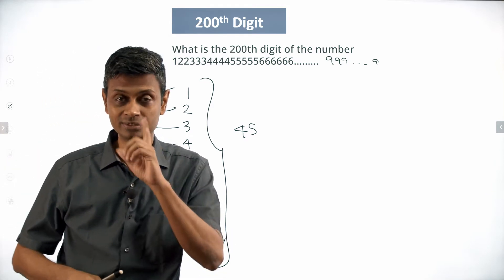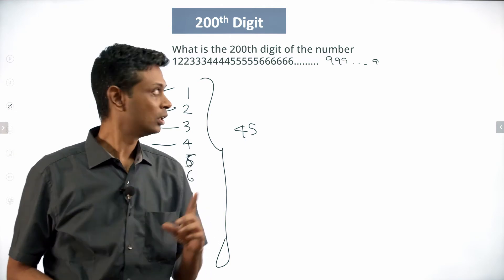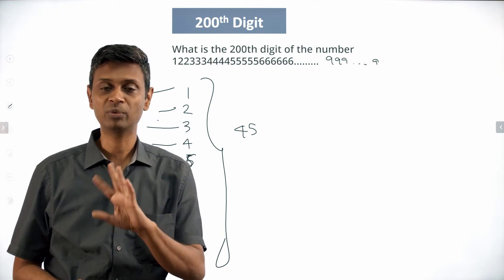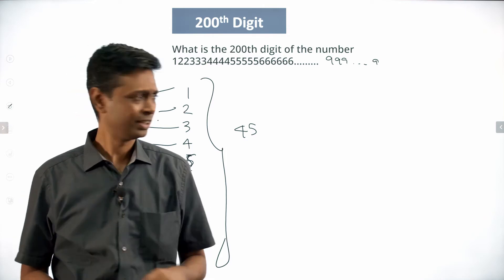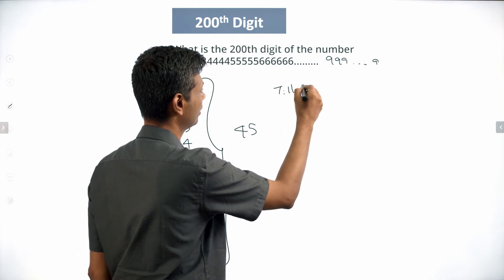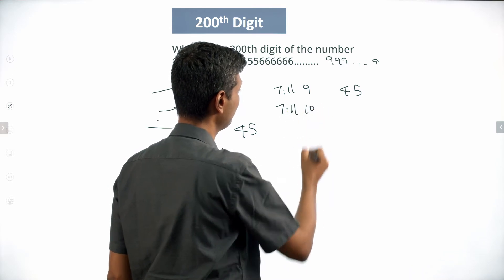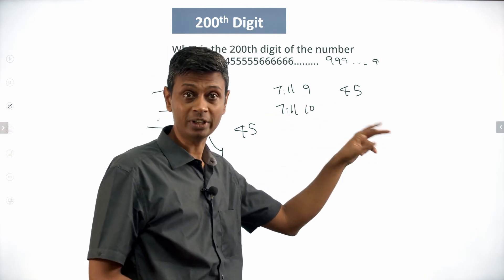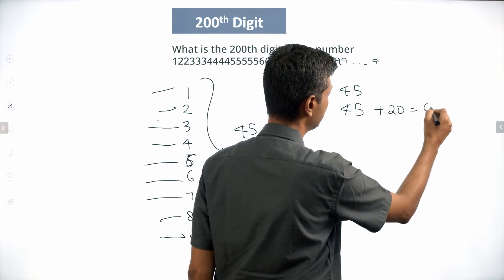When the 46th digit is 1, the 47th digit is 0 — digits 46, 47 are 1, 0. Digits 48, 49 are 1, 0. Digits 50, 51 are 1, 0. 10 will get repeated 10 times, so now we are going to go till 10. Till 9, we are at digit number 45. Till 10, 10 will get written 10 times, so it will appear in 20 positions — 20 digits. We are at 45 plus 20, equal to the 65th digit.